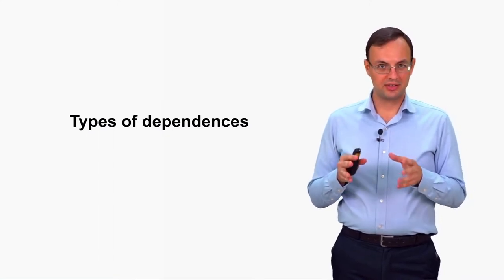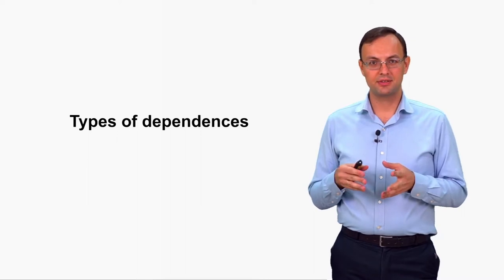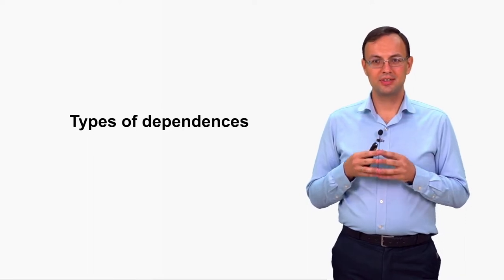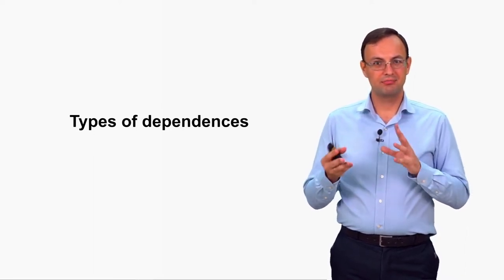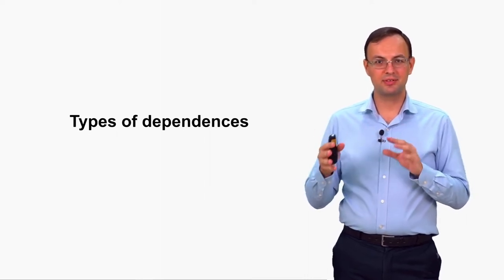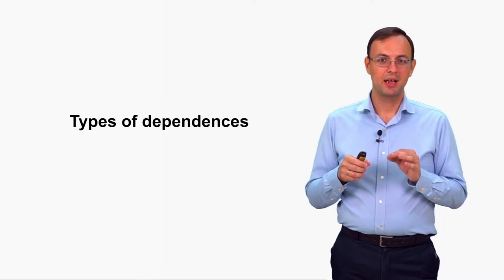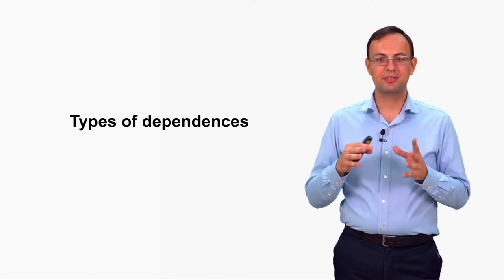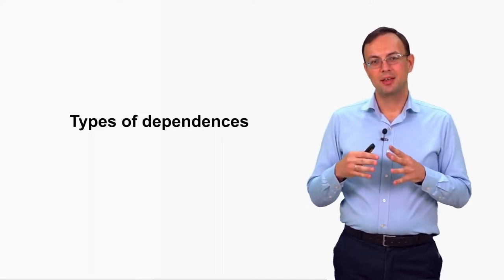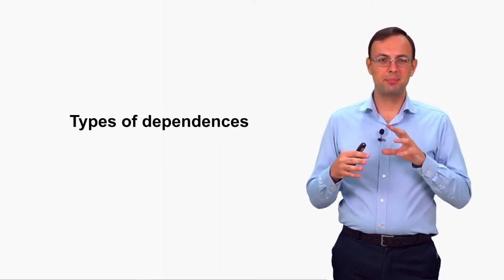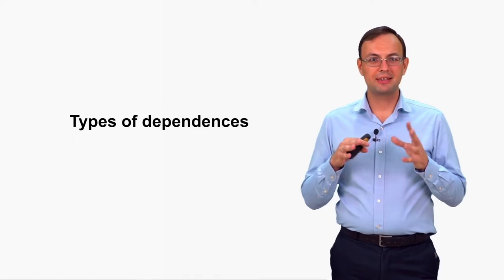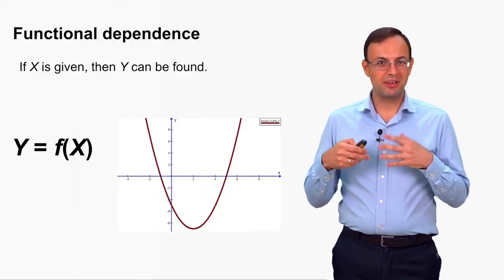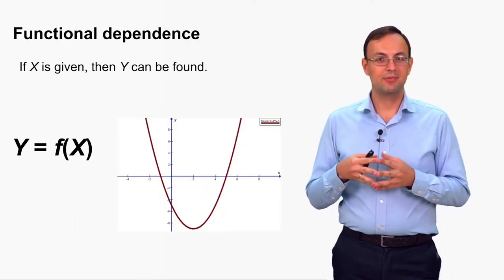As we now know the mathematical definitions of independent and uncorrelated random variables, let's consider the matter of dependence between a pair of random variables in more detail. When we say that a pair of random variables are dependent ones, the meaning of this phrase may be different, because there are different types of dependencies. The first one, probably the most well-known, is a functional dependence.